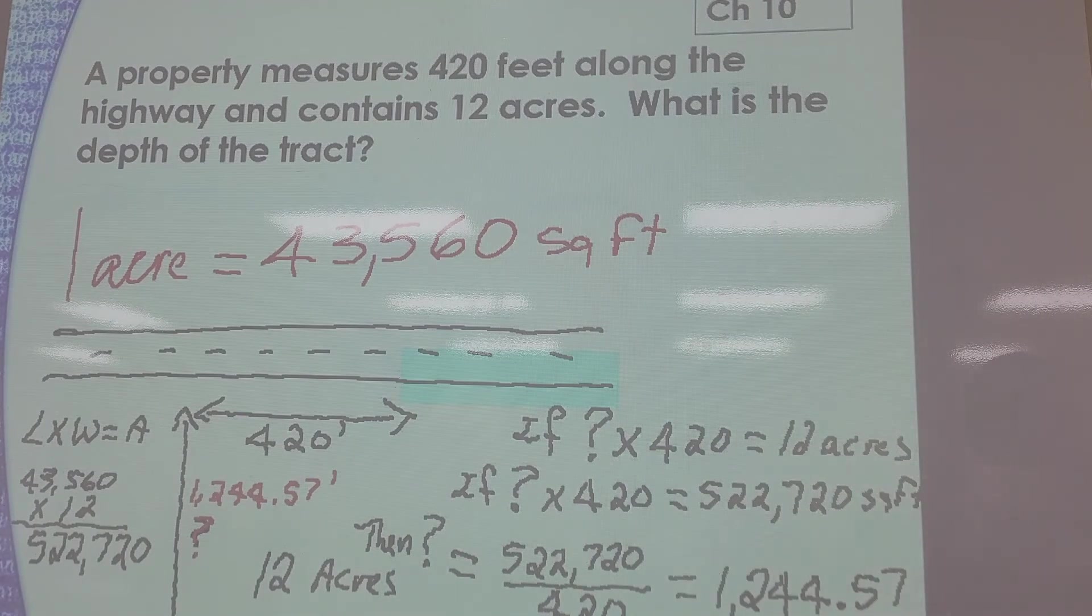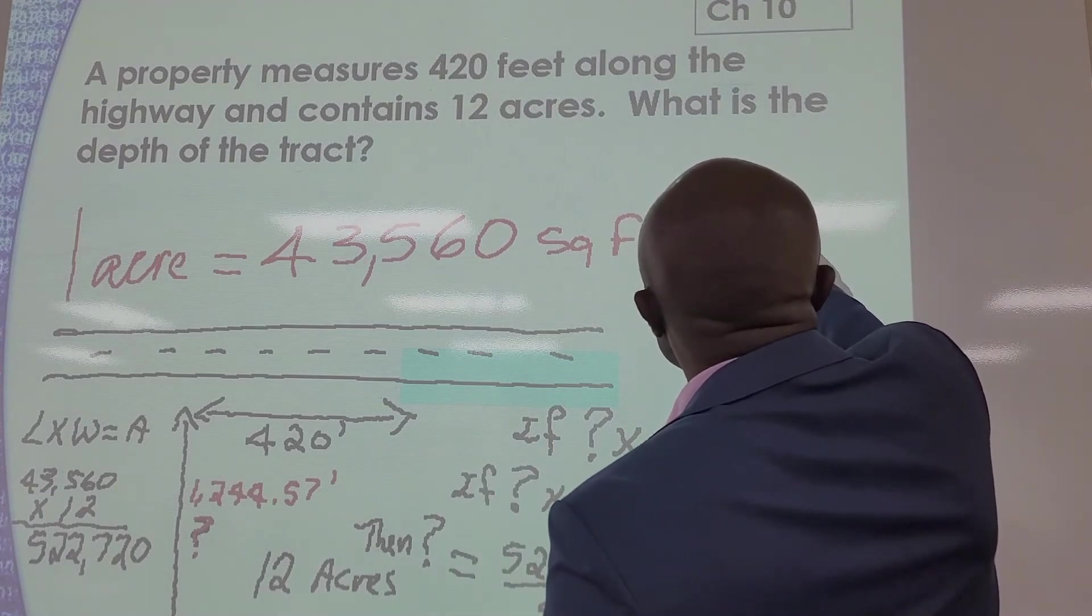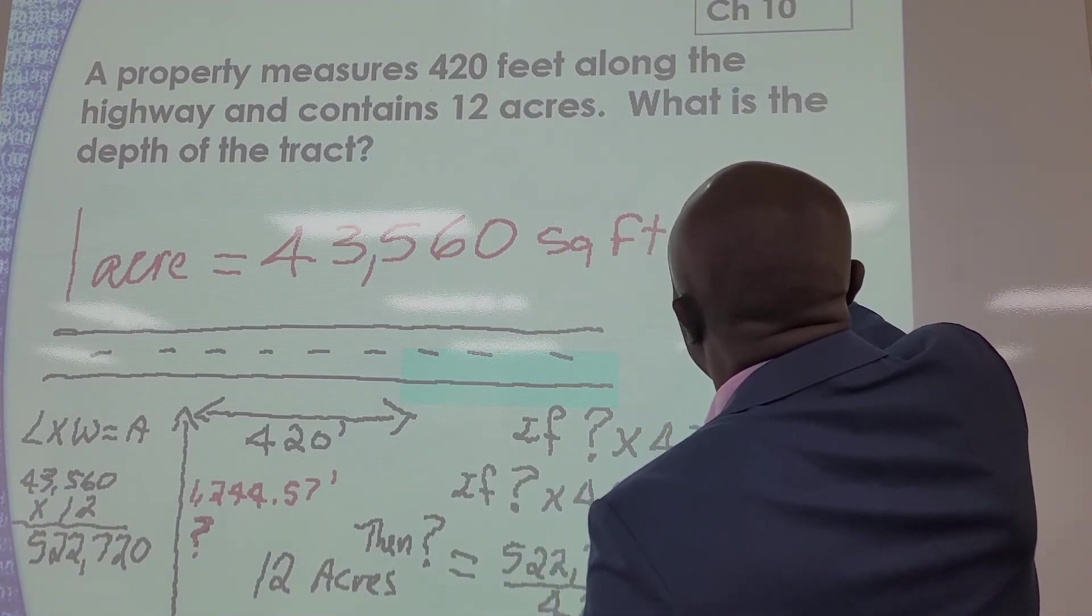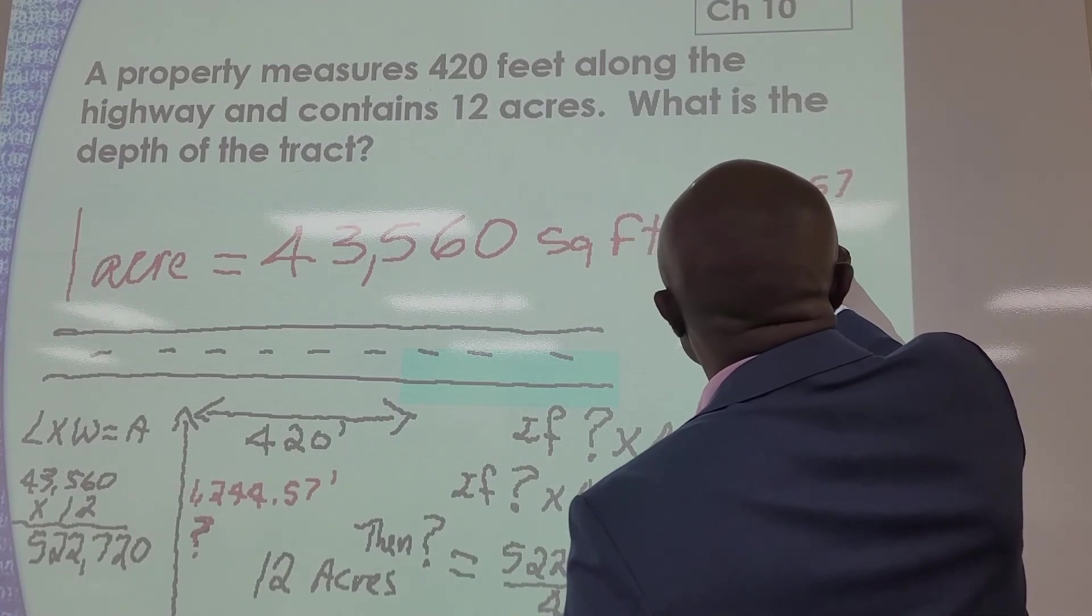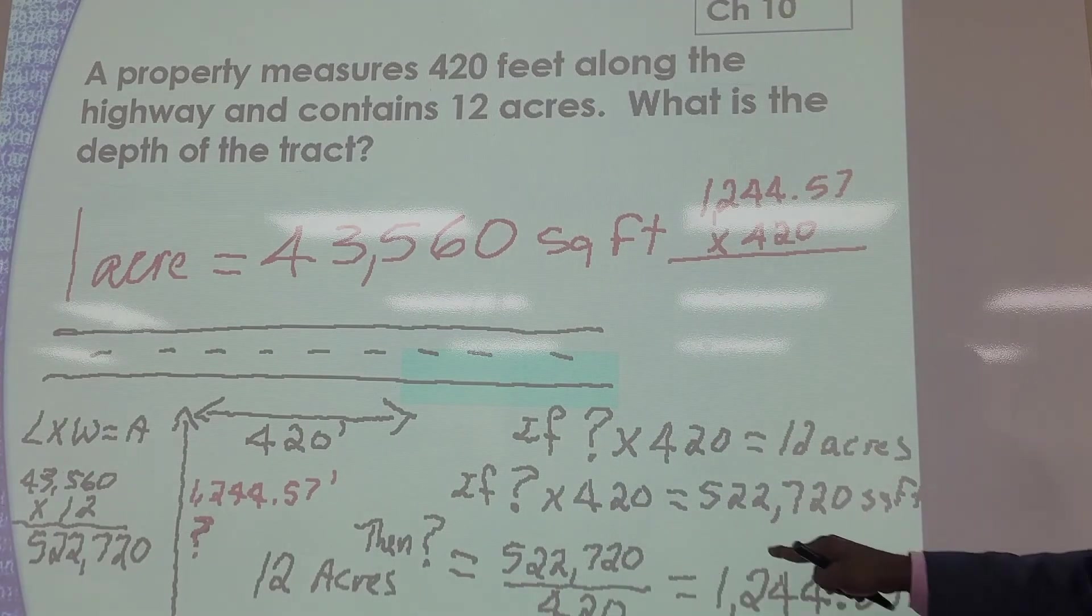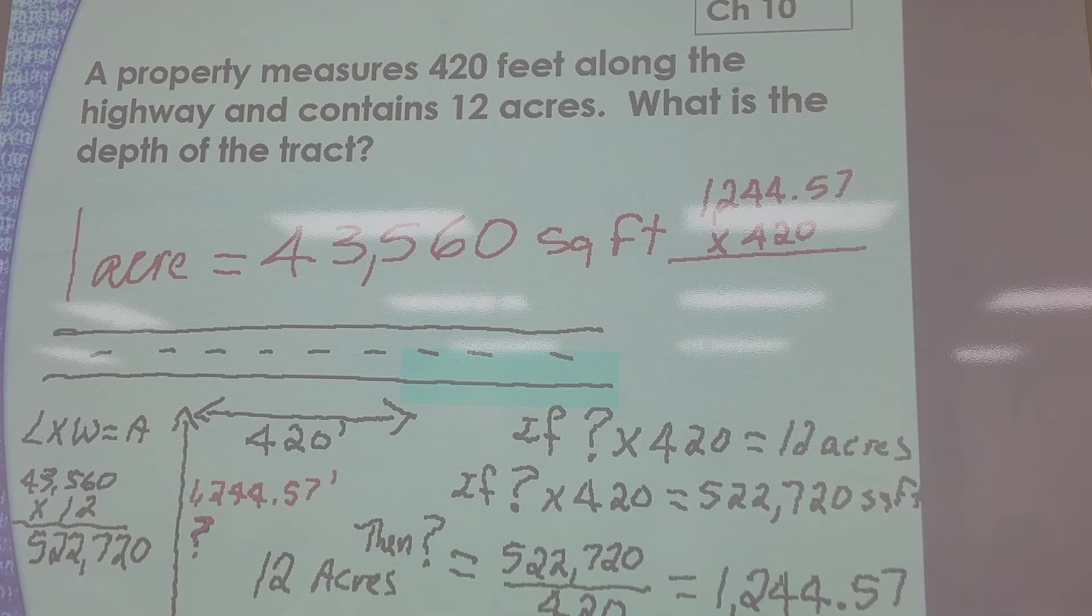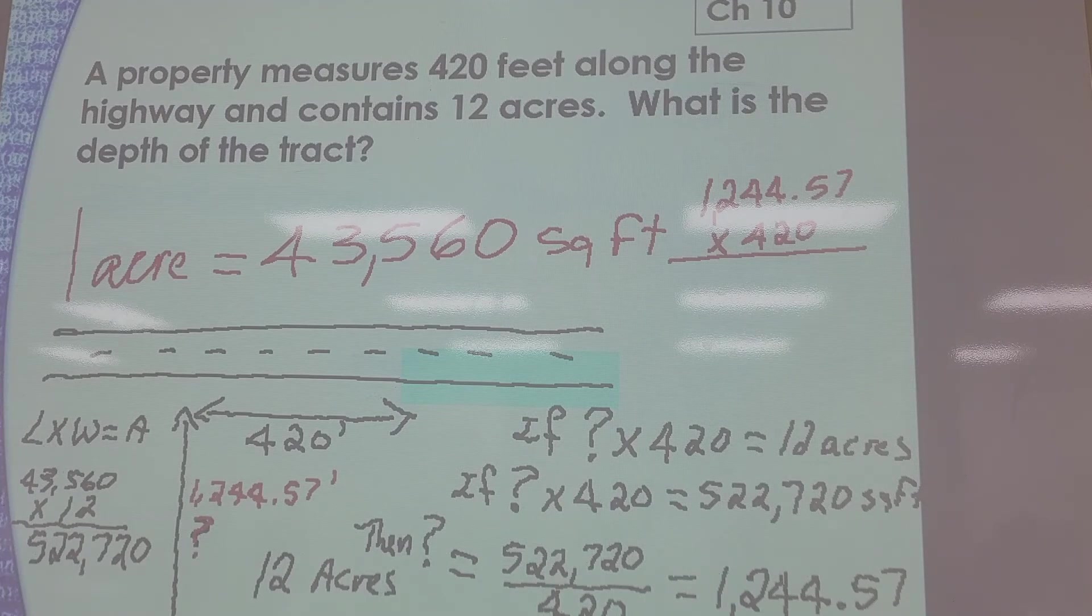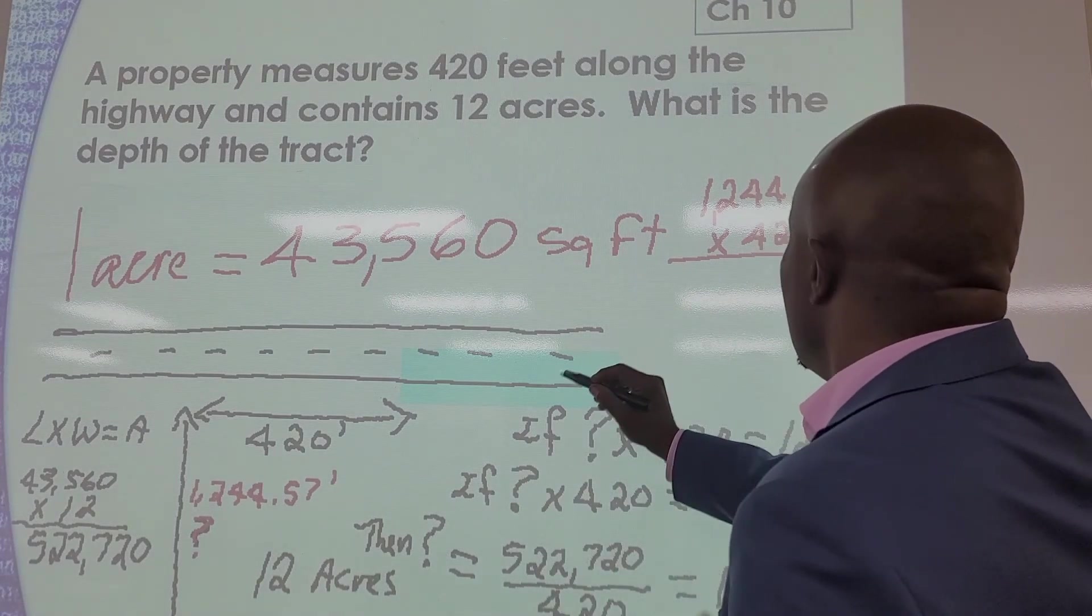So if you take, to check your answer, you can take 1,244.57, multiply that by 420. It should give you 522,720. Somebody do it please. Don't take my word for it, don't trust me, trust your own skills.